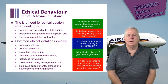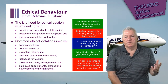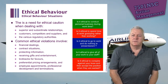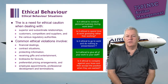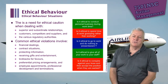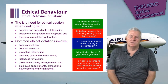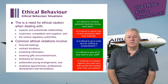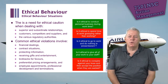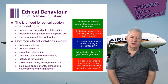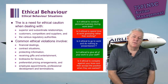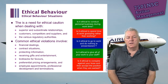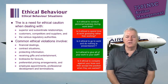There's a need for ethical caution when dealing with certain situations. These include superior and subordinate relationships, customers, competitors and suppliers, and the various regulatory authorities. Some of the common ethical violations involve financial dealings, contract situations, protecting information, receiving gifts and entertainment, kickbacks for favours, preferential pricing arrangements, employee appointments, professional development and terminations. One that hasn't been listed, which has been in the news, is sexual propriety in the workplace — quite a common ethical violation.